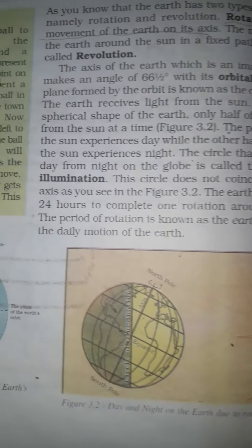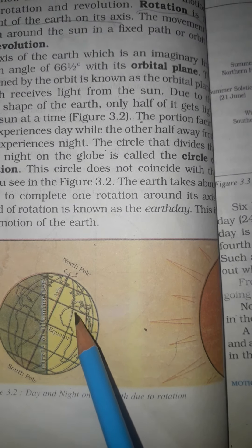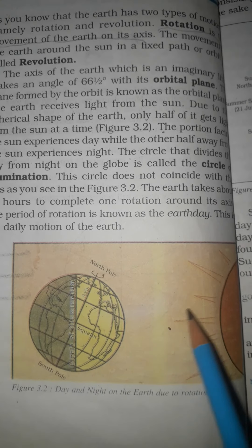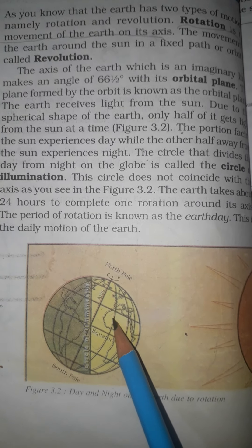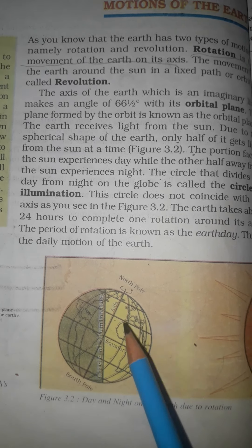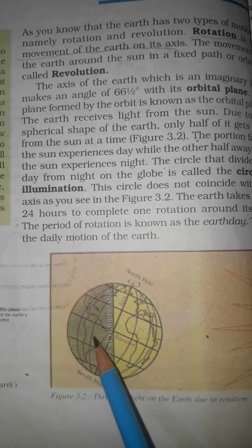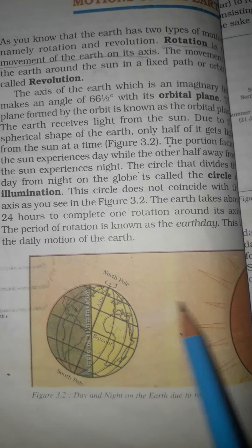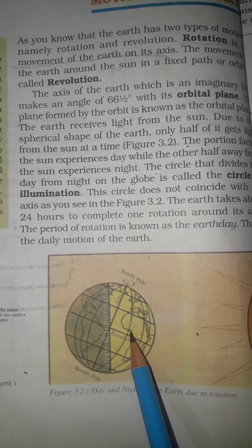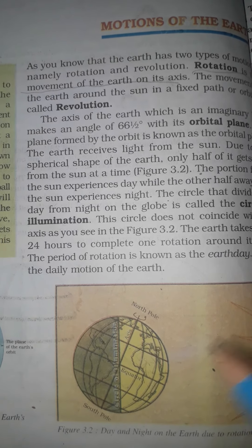This is diagram 3.2. This is the sun and this is the earth. Because the earth is spherical in shape, only half of its parts get light from the sun. The part which receives sunlight faces day, and the part which is away from the sunlight faces night.